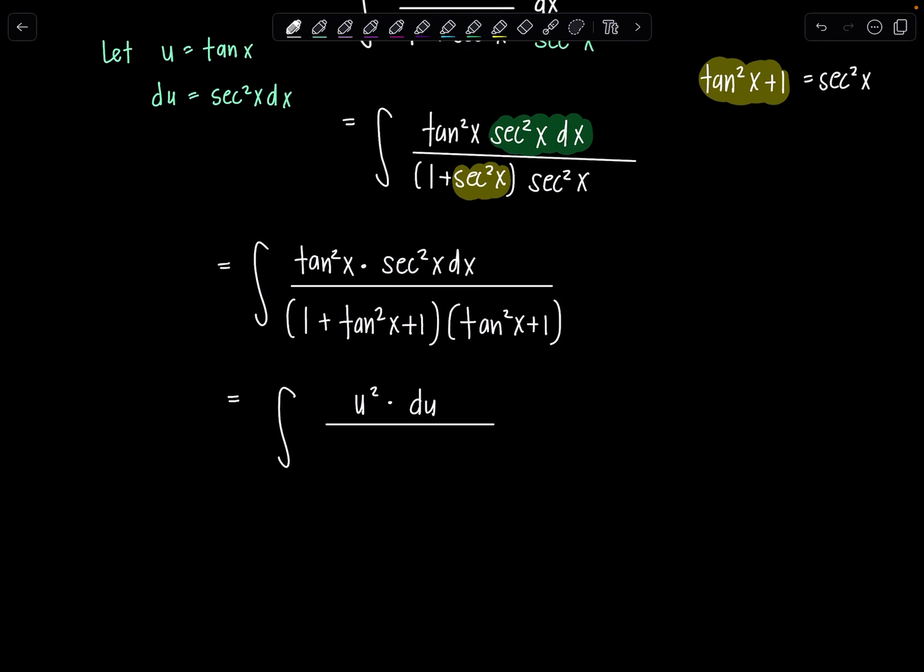Downstairs, one plus tan squared x plus one is going to be two plus u squared, and then the other term is going to be u squared plus one. Fabulous. Okay, so now I'm looking.